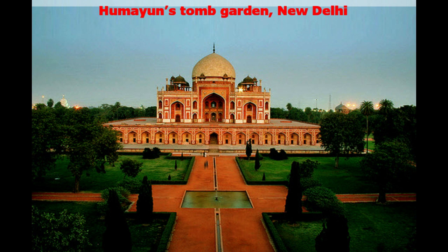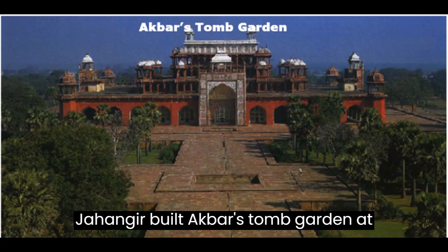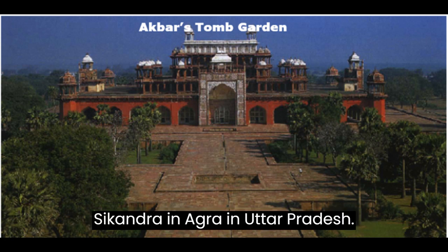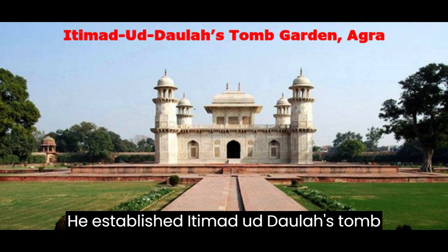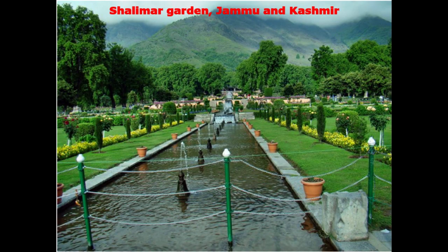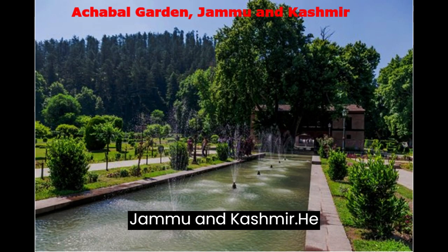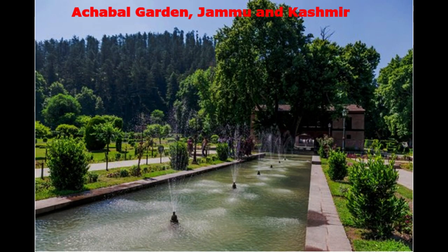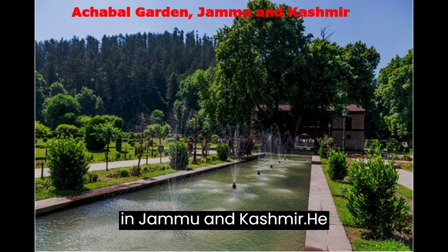Akbar established Humayun's tomb garden in New Delhi. Jahangir built Akbar's tomb garden at Sikandara in Agra, established Itmad-ud-Daula's tomb garden in Agra, and built Shalimar Garden at Srinagar in Jammu and Kashmir. He also developed Ajbal Garden near Anantanag in Jammu and Kashmir.